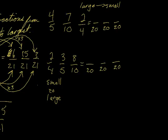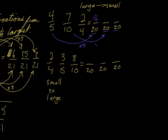For the first practice question, we have 4/5, 7/10, and 2/4. I've worked out that 20 is the common multiple of all three denominators. What did I do to 5 to get 20? Multiplied by 4 — so that makes 16. What did I do to 10 to get 20? Multiplied by 2 — so the 7 becomes 14.